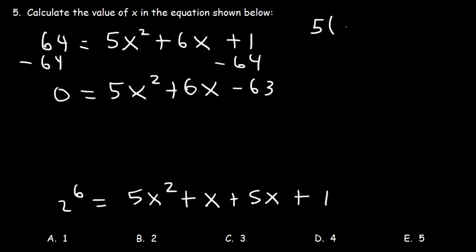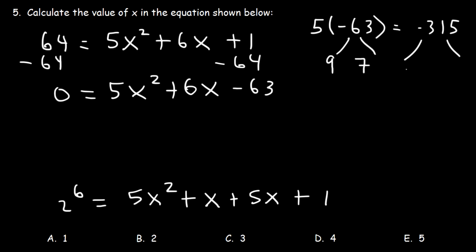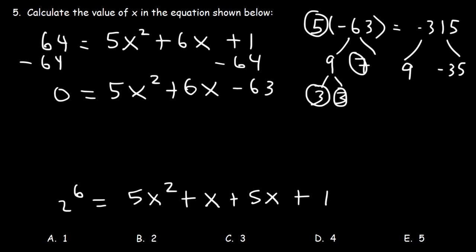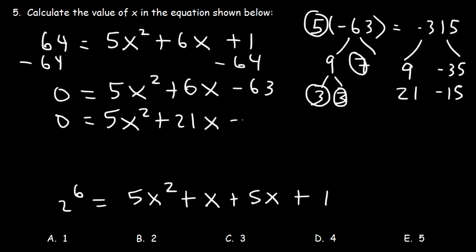What two numbers that multiply to five times negative 63 add up to six? Five times 63 is 315. Factors of 63 are nine and seven. If we divide negative 315 by nine, that gives us negative 35. Factors of nine are three and three, so we have five, three, three, and seven. We could use seven and three, which is 21. 315 divided by 21 is 15, and these two differ by six. So let's replace six x with 21x and negative 15x.